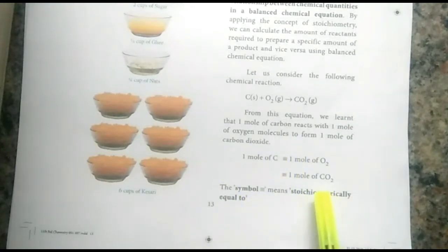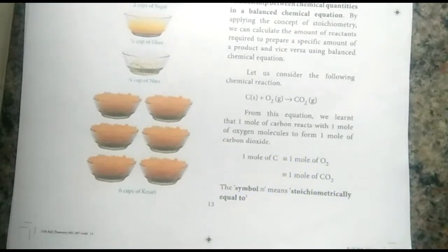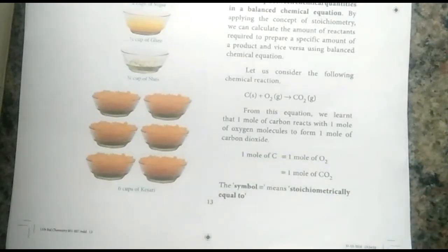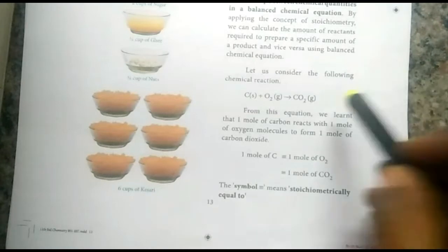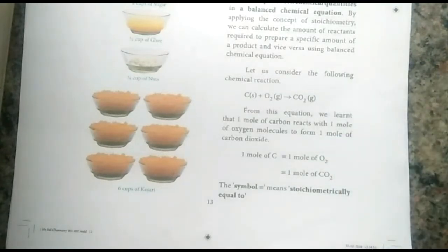In stoichiometry, we use a triple-bond-like symbol. Stoichiometry gives a numerical relationship between two quantities in a balanced chemical equation. Only in balanced chemical equations can we easily calculate the stoichiometric proportions.